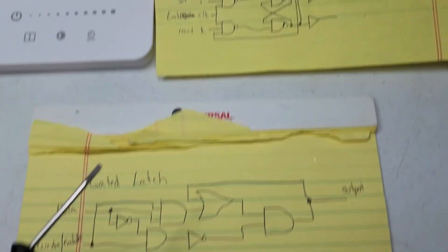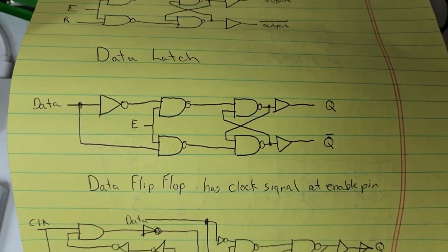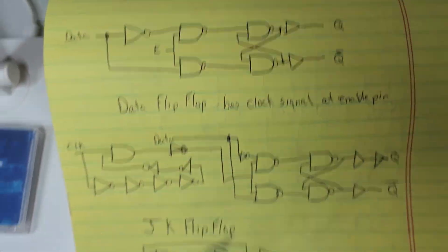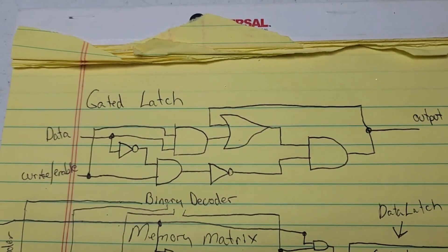Right, so I previously built this data latch, which basically is the same thing except it has like an output and an output not. What I mean, this does too really, it's just not showing the output not, or is it?